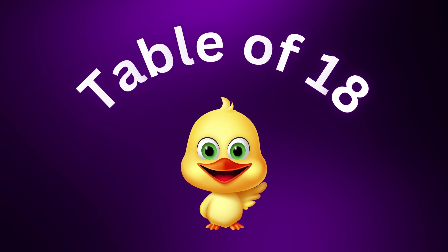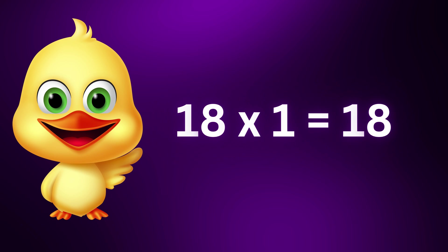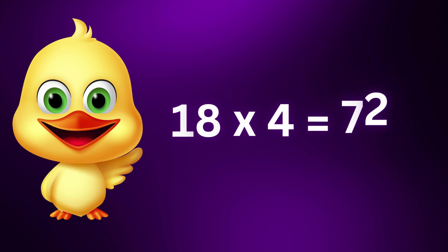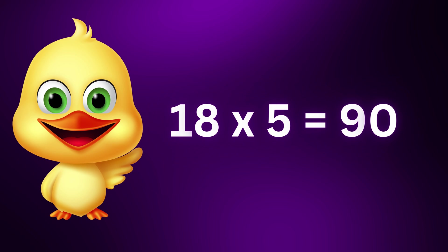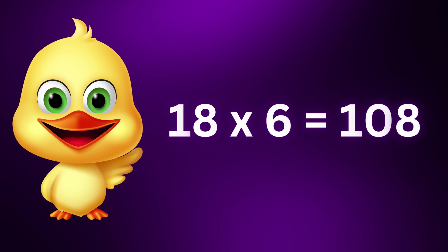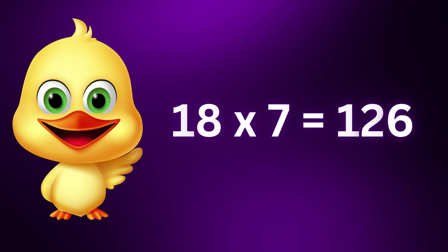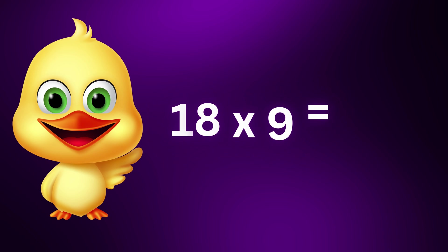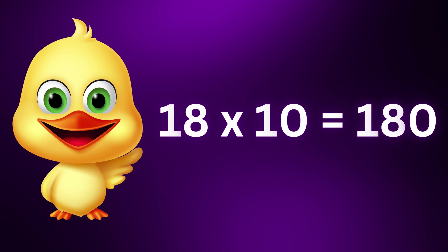Table of eighteen: 18×1 is 18, 18×2 is 36, 18×3 is 54, 18×4 is 72, 18×5 is 90, 18×6 is 108, 18×7 is 126, 18×8 is 144, 18×9 is 162, 18×10 is 180.